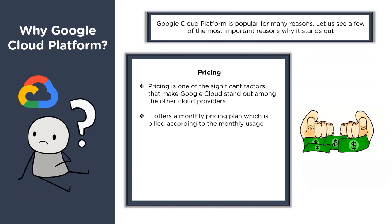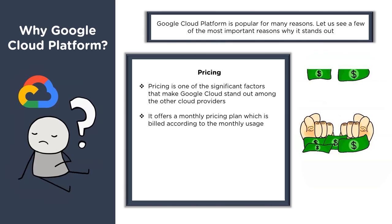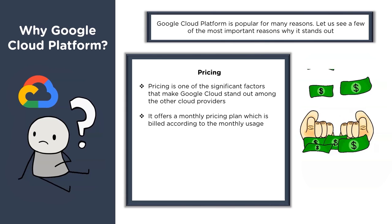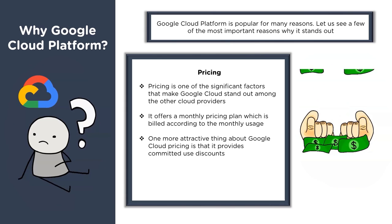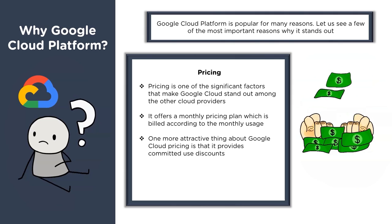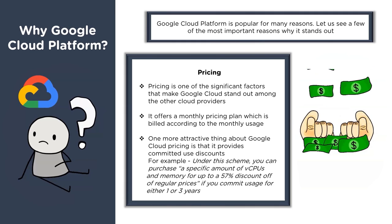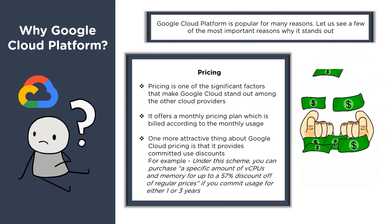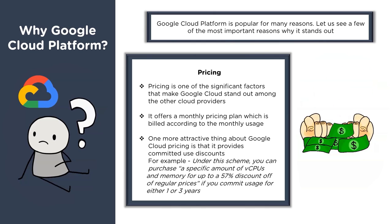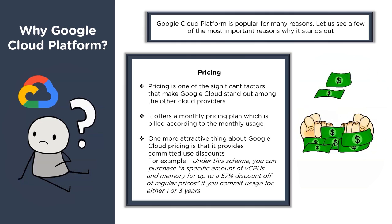Google Cloud offers various pricing options for different service models — IaaS, PaaS, or SaaS. One attractive feature is committed use discounts: you can purchase a specific amount of virtual CPU cores and memory for up to 57% discount off regular prices if you commit usage for either one or three years. There are various such options that suit different customer requirements.